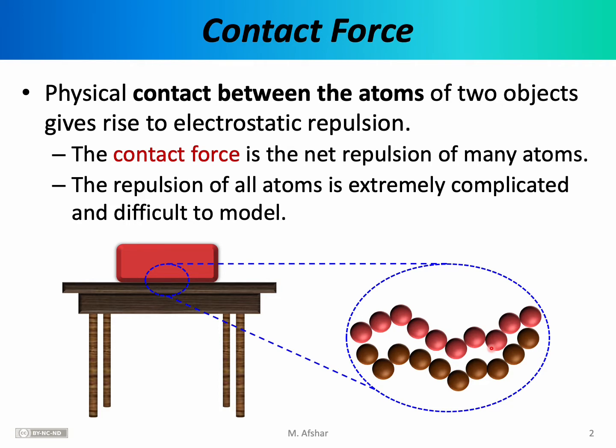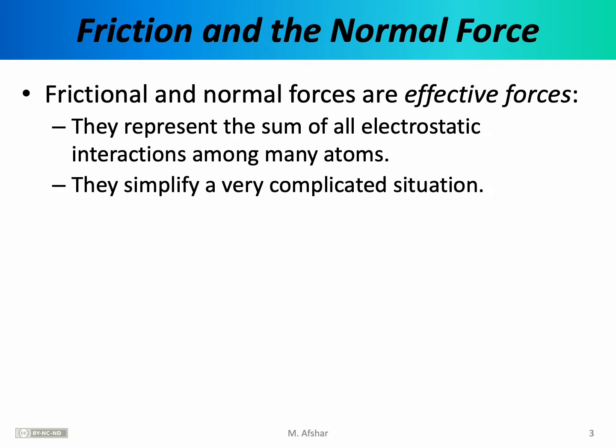To simplify the situation, we're going to take the contact force and divide it up into two simpler forces. We'll call those forces friction and the normal force. Frictional and normal forces are effective forces. They both refer to really the same force — the electrostatic interactions we were just discussing — however, they represent different aspects or components of that force. By speaking about frictional and normal forces, we're essentially simplifying a very complicated situation.